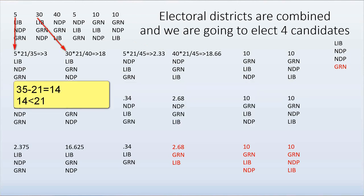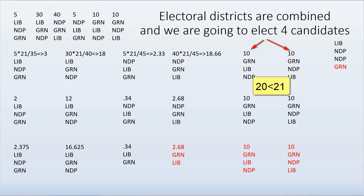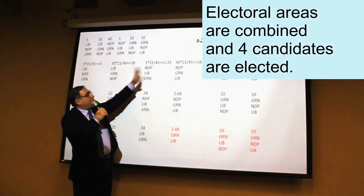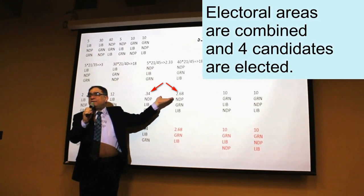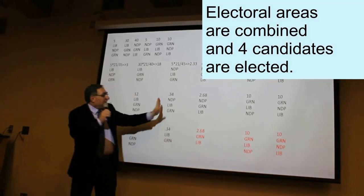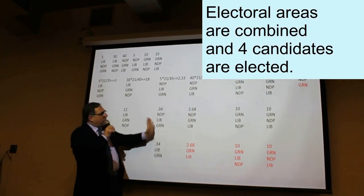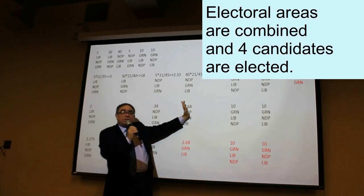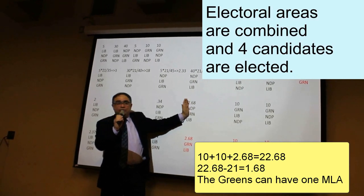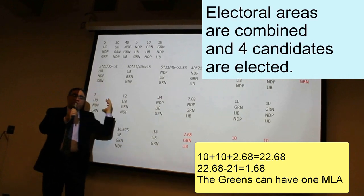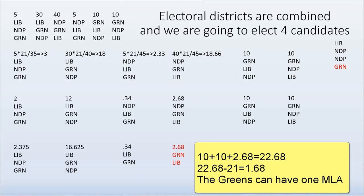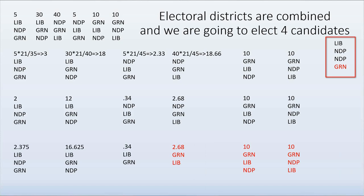The Greens have 20 votes — they cannot send anyone directly. But after NDP sends their two candidates, they have 3 residual votes. Most of those votes have Green as second preference and Liberal as third. So approximately 2.68 of those residual votes transfer to Green, and 0.34 to Liberal. This is the transferability in single transferable vote. Green will also go to parliament as a result of this automatic distribution of the residue. Now everyone is represented in parliament.